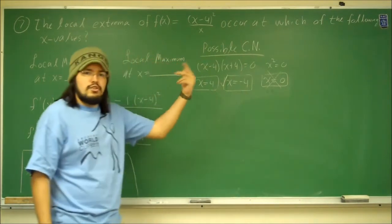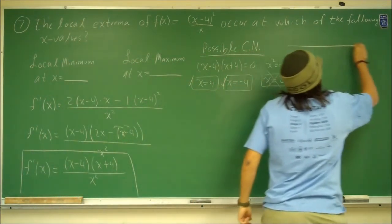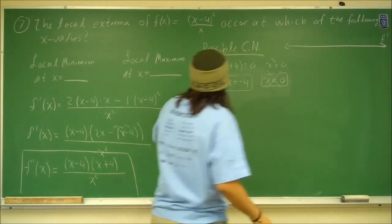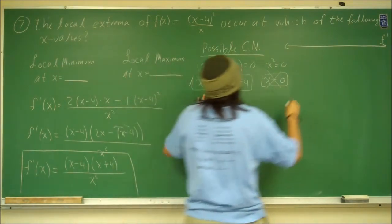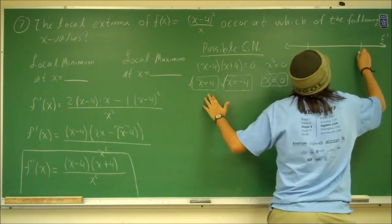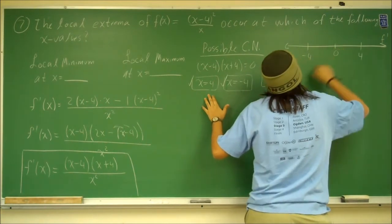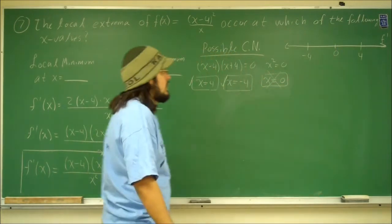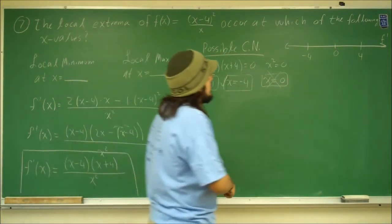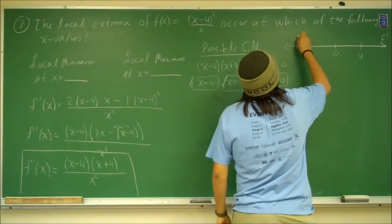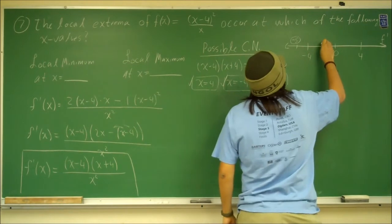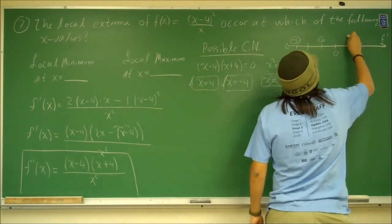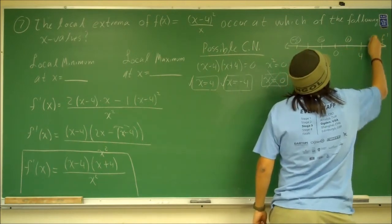When we draw the number line for f prime, we plug in our critical numbers — negative 4 and 4 — and also 0, even though 0 is not a critical number, because the function is undefined there. Once we have this number line, we pick test points: minus 5 to the left of minus 4, negative 1 between negative 4 and 0, 1 between 0 and 4, and 5 to the right of 4.